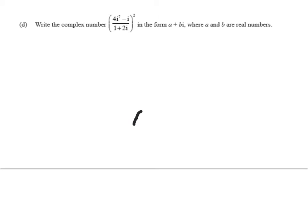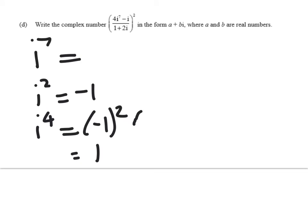The first one is to write this complex number in the form a plus bi. You'll see i to the power of 7 in there. Remember that i squared is equal to negative 1, which means that i to the power of 4 is equal to negative 1 squared, which is just 1.